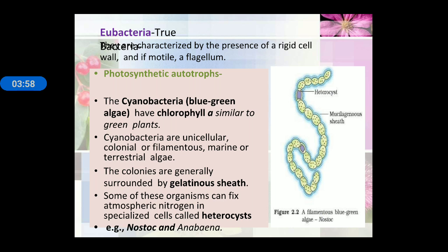True bacteria have a rigid cell wall, and if motile they may have a flagella. Eubacteria have photosynthetic pigment and are photosynthetic autotrophs. Example is cyanobacteria — blue-green algae — which have chlorophyll A similar to green plants. Cyanobacteria are unicellular, colonial, or filamentous, marine or terrestrial algae. Colonies are generally surrounded by a gelatinous sheath. Some can fix atmospheric nitrogen in specialized cells called heterocysts — examples: Nostoc and Anabaena.